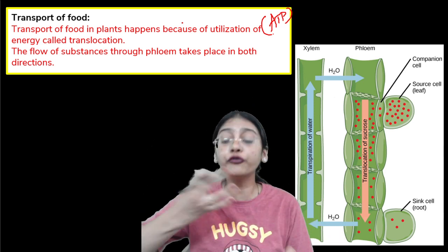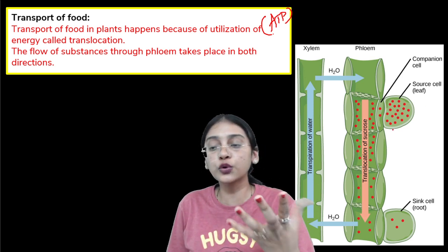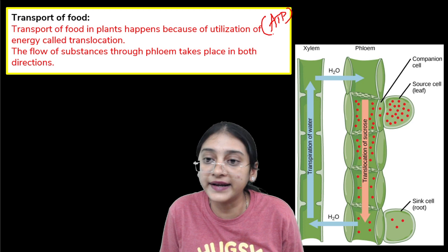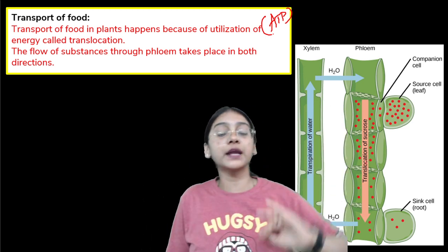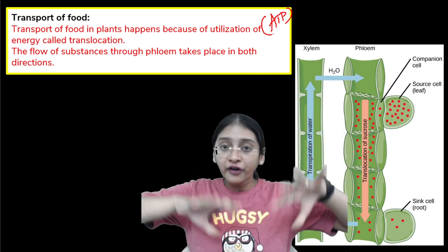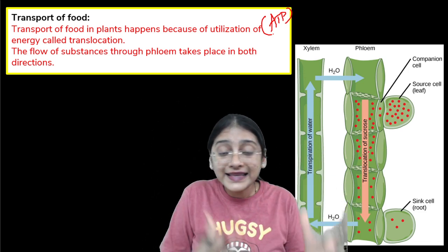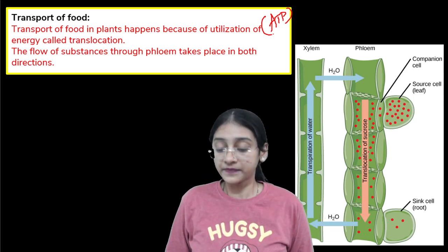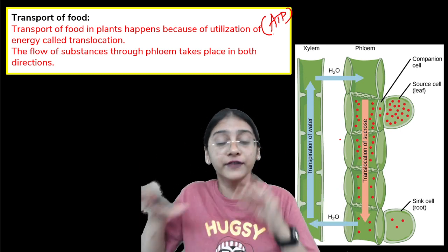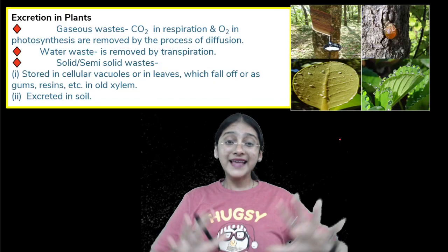The movement of food substances in plants is bi-directional — meaning food moves in both directions. As seen in the image, glucose is produced in the leaf, converted into starch and then sucrose, and then translocated to different parts of the plant. It can move to the roots, the stem, or other parts. In fruits and certain vegetables we eat roots or leaves, and food is stored in different parts of the plant. This is why food movement is called bi-directional.